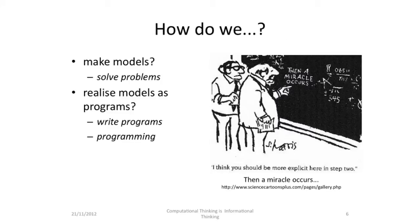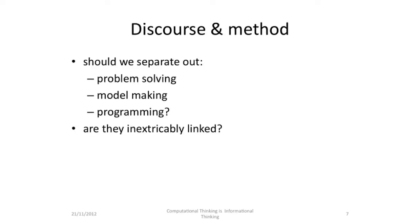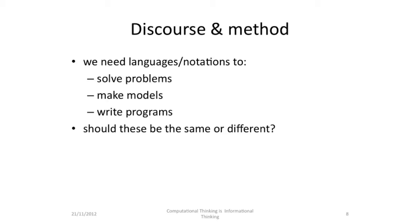Some really good questions are: how do we make models by solving problems? And how do we realise the models as programs? We write programs in the process that we call programming. We need to decide whether we're going to separate out problem solving, model making and programming, or whether they are somehow linked very tightly together. We also need to think about the language and notations we're going to use to solve problems, to make models and to write programs — should these be the same or should these be different?